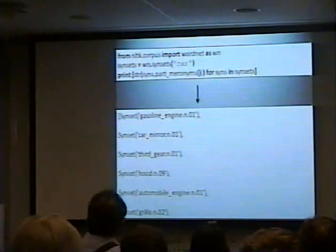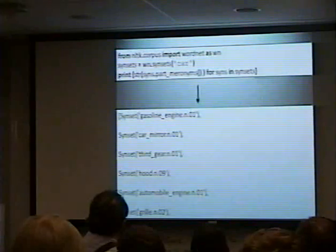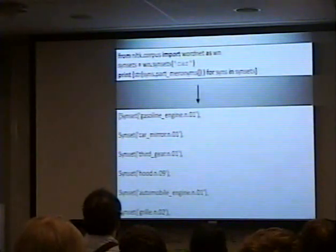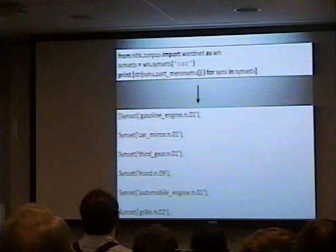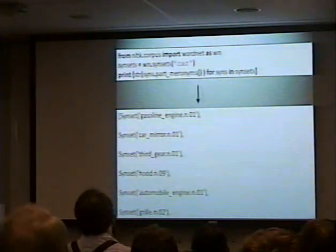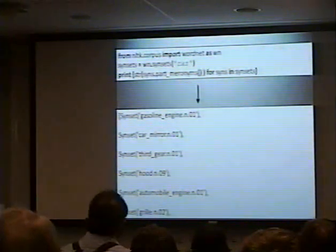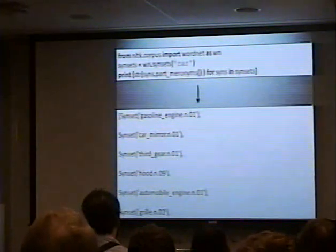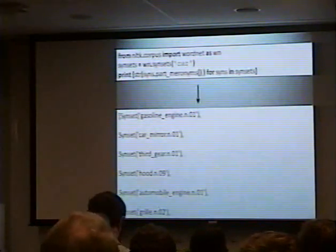We're going to import WordNet again. This time we're going to run synsets on the word 'car', and as we loop through each one, we're going to do part meronyms. WordNet has different types of meronyms, and you can go through the documentation to find out what specifically suits your needs. We got a bunch of stuff: gasoline engine, car mirror, third gear, hood, automobile engine, grill — it was actually a much larger list, I think I cut it down.